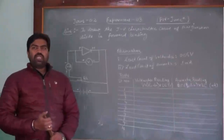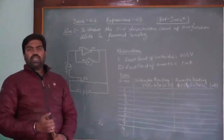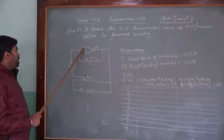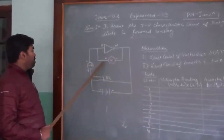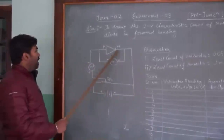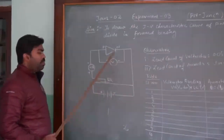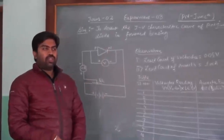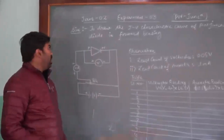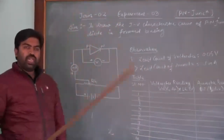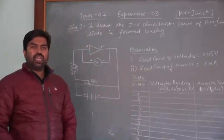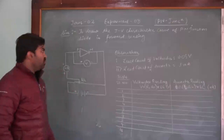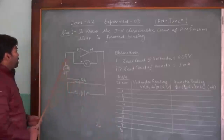In forward bias, the P-type semiconductor is connected to the positive terminal of the battery and the N-type is connected to the negative terminal of the battery. This is the forward bias condition. In reverse bias, the P-type is connected to the negative terminal and the N-type is connected to the positive terminal of the battery. Let us first see its circuit diagram.